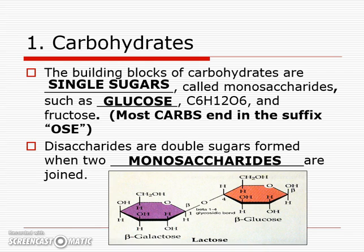You will need to know the building block of each macromolecule. A building block — think of a Lego block — builds a bigger structure. A carbohydrate is built of carbon, hydrogen, and oxygen. Those building blocks we call a monosaccharide: mono for one, saccharide for a little sac of sugar. So single sugars are built of one monosaccharide. When you put two sugars together, we call those disaccharides — di for two.